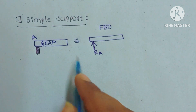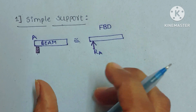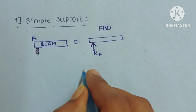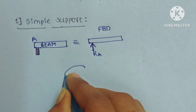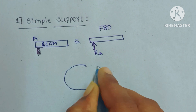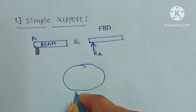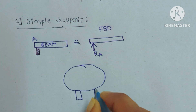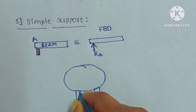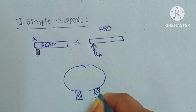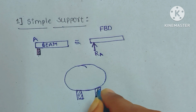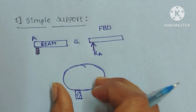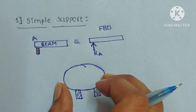For an example of a simple support beam in our daily life: when we are making roti or something, a pan is placed on two bricks. The two bricks are the supports and the pan is placed on them. This is an example for simple support.